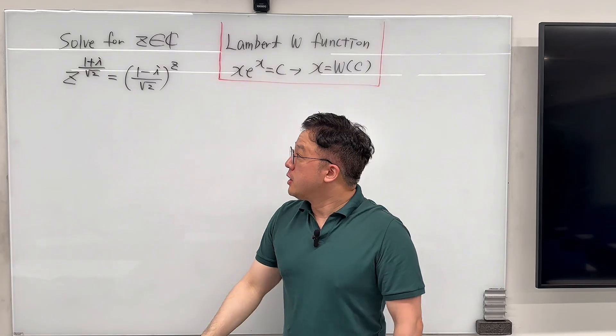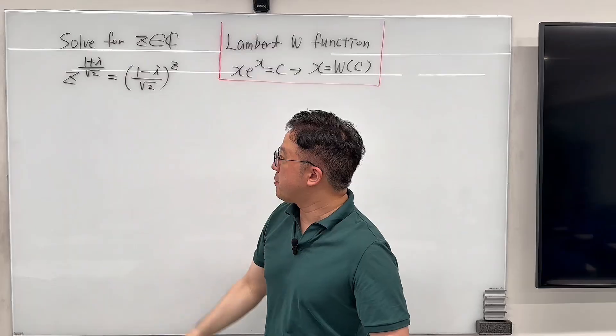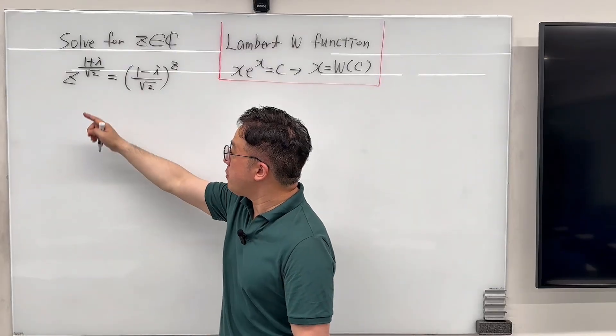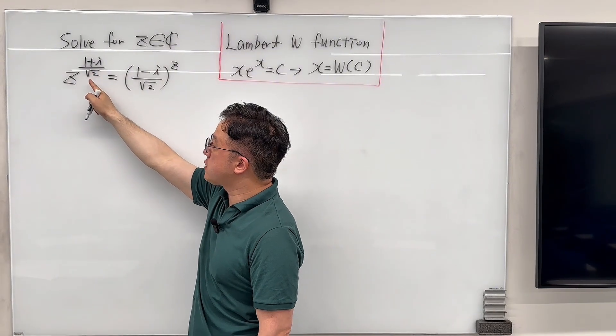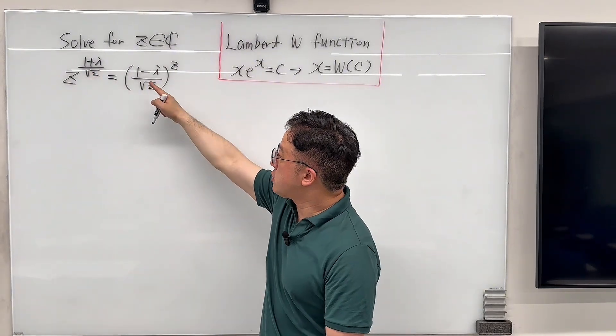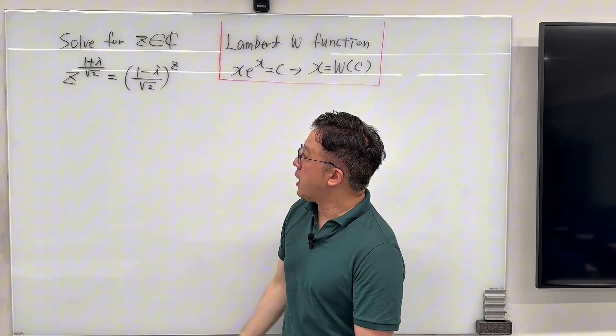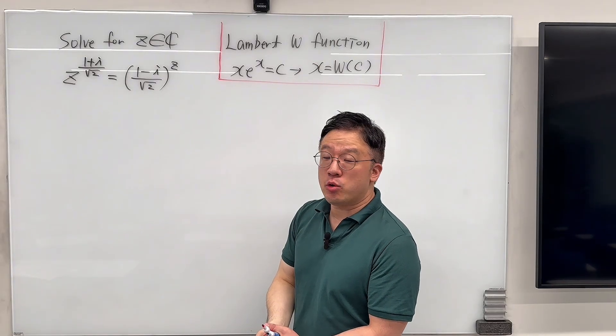Okay, here's the question. The question is: for z as a complex number, we have z to the power of (1 plus i) over square root of 2, equal to (1 minus i) over square root of 2, to the power of z.